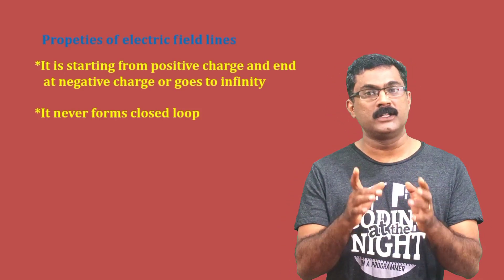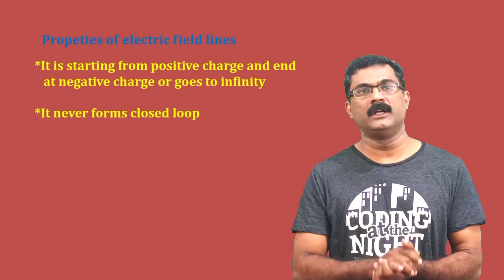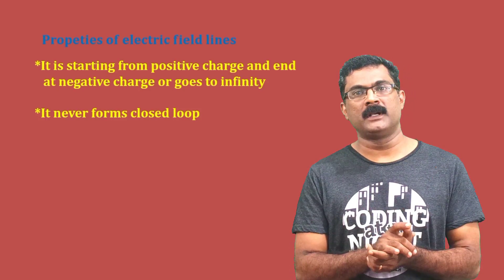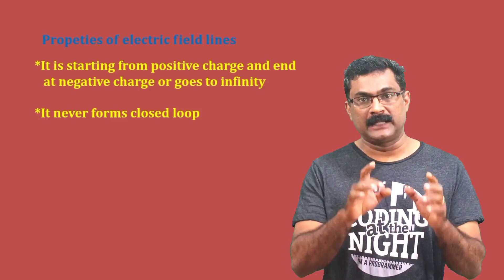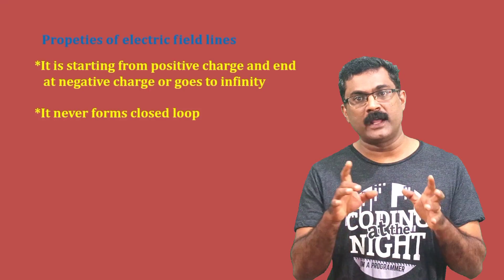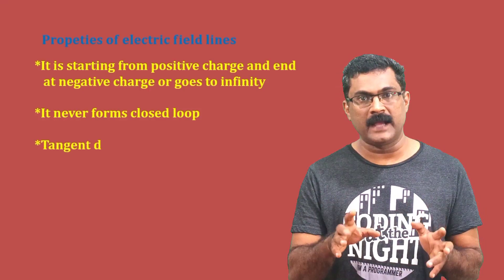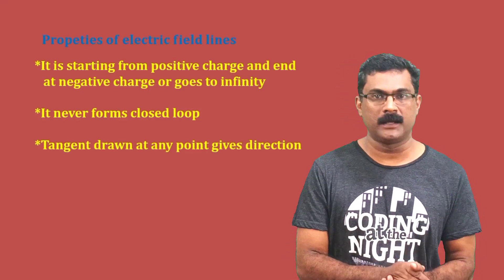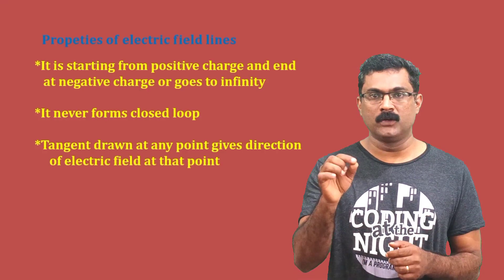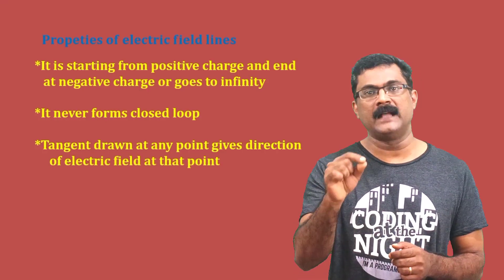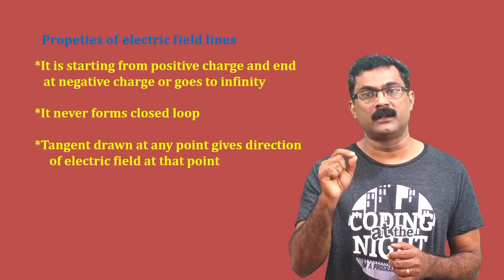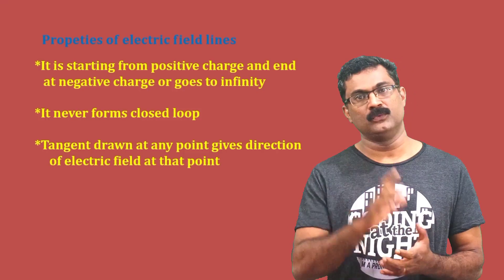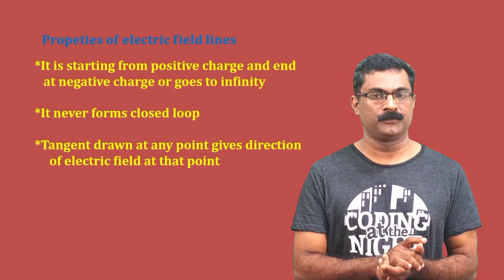The third property is: the tangent drawn at any point on the field line gives the direction of the electric field at that point. At any point along the field line, the tangent indicates the direction of the electric field at that location.